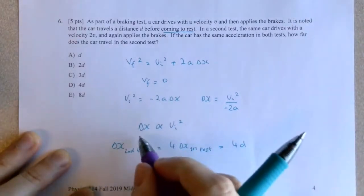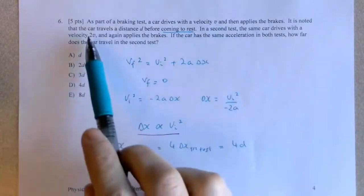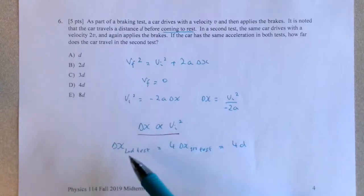The delta X will scale with the initial velocity squared. So if we double the velocity from V to 2V, the distance traveled has to be 4 times as far.